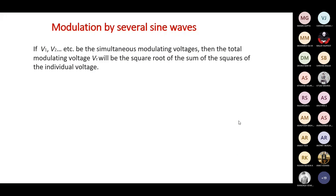Now, if we have more than one sine wave — modulation by several sine waves — what will be the corresponding modulation index and voltage? If V1, V2, etc. are the simultaneous modulating voltages, then the total modulating voltage Vt will be the square root of the sum of the squares of the individual voltages: Vt = √(V1² + V2² + ...). Take this equation.